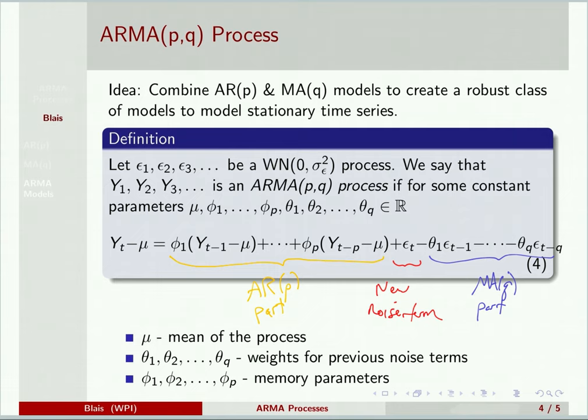And the idea here is now we allow for a much more complex autocorrelation structure because you can go back and choose p to be whatever you want. How many days in the past are you allowing it to remember parts of itself? And then you can choose q separately. How many of the past noise terms are you allowing? And now you can see you get all these different combinations of p and q.